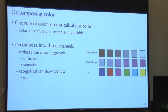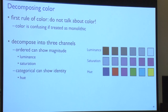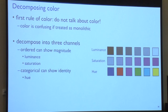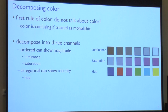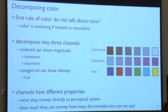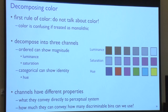Luminance is a really interesting channel because that's actually how you see detail — you need luminance contrast to detect edges. If you decompose a picture into its luminance lightness information, that's where you get all the edges; the color information is much more blobby. This is the underlying perceptual reason why you're told not to have blue text on a red background: you should have high luminance contrast for text because you need to detect edges. So luminance has this intrinsic ordering. Saturation similarly communicates magnitude. Hue, in contrast, communicates the identity of something and is good for categorical information.